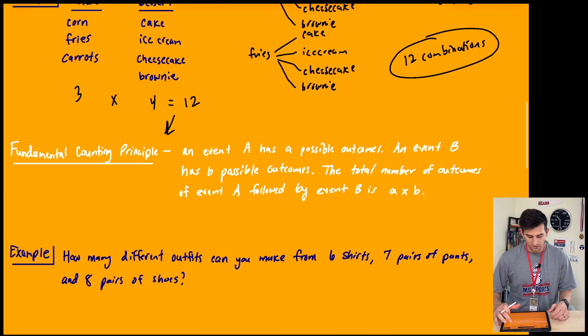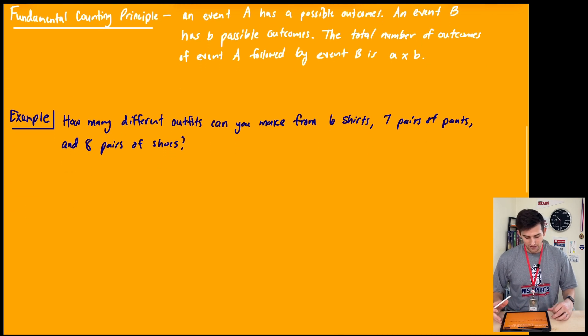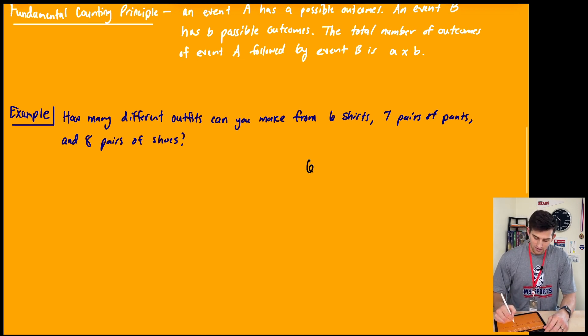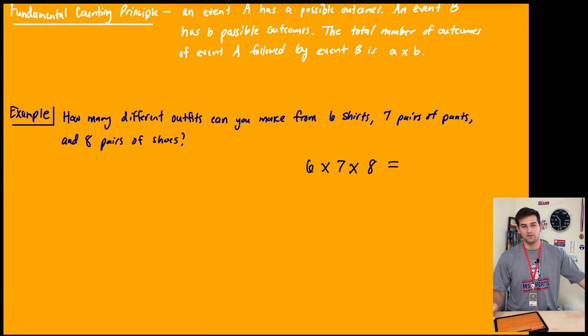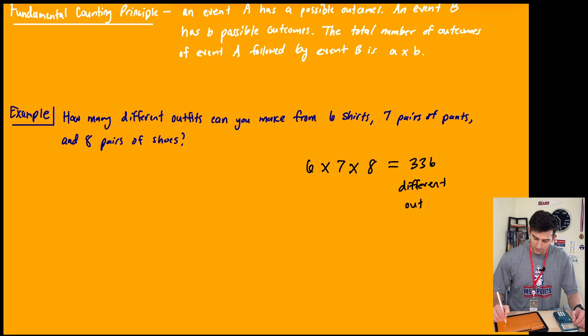So let's use this fundamental counting principle to do another example. How many different outfits can you make from six shirts, seven pairs of pants, and eight pairs of shoes? So all we have to do is six times seven times eight. If we do that, we get six times seven times eight equals 336 different outfits.